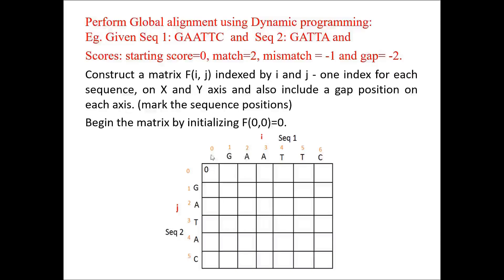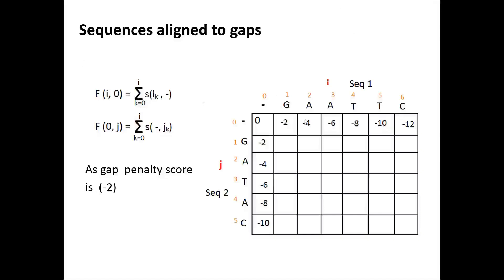Begin the matrix by initializing F(0,0) as 0. Next, the sequences have to be aligned with this gap position. For this gap-to-sequence alignment, a specific formula is applied. As the gap penalty score is minus 2, the first sequence when aligned with the gap will have minus 2. Similarly, moving to each subsequent box is a summation of the value in the previous box plus minus 2, giving an increment of minus 2 in each box. The same applies for the y-axis.